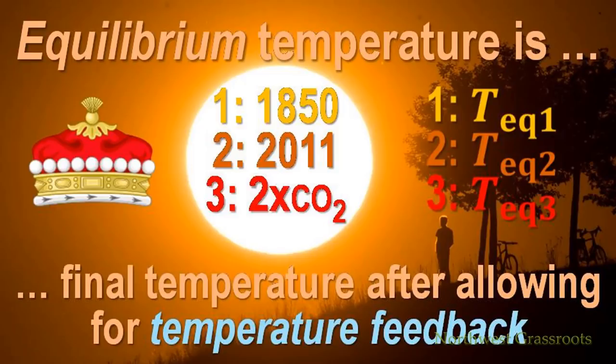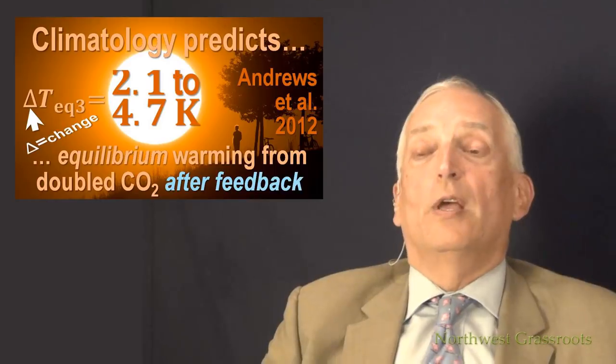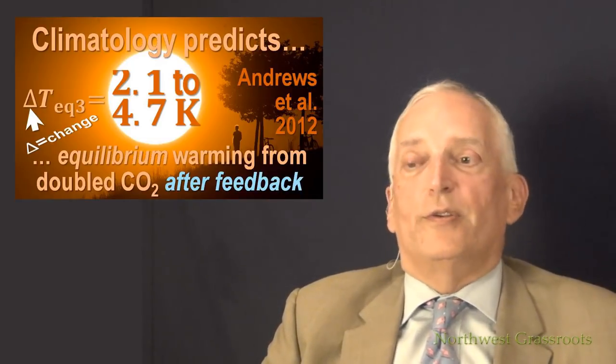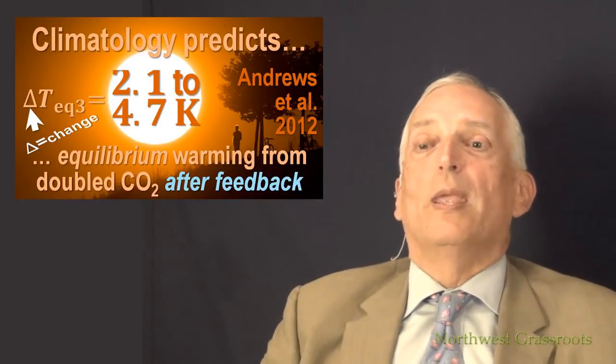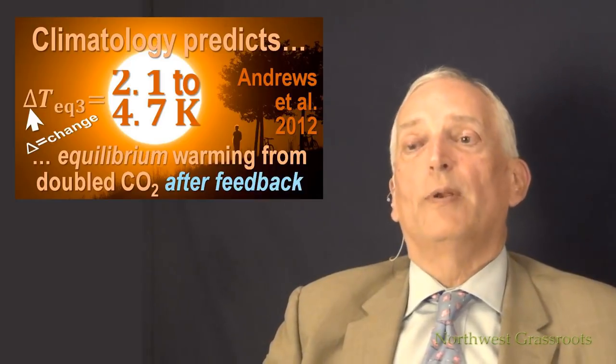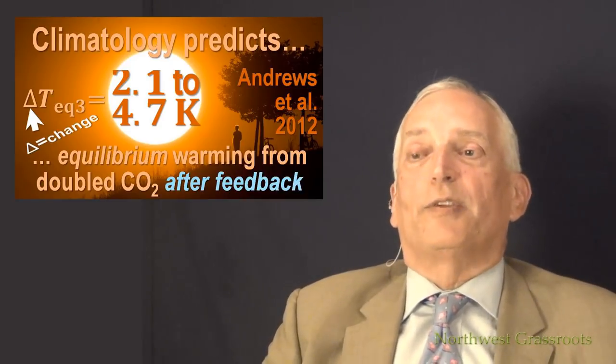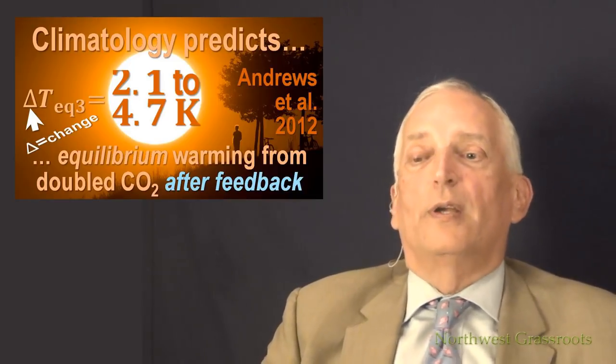We'll recap to say that equilibrium temperature is final temperature after the climate has settled down, allowing for not only the direct forced warming from adding CO2 or whatever it is to the atmosphere, but also after all temperature feedbacks have acted. Temperature feedback is a knock-on warming caused just by the fact that through CO2 or something else, we have caused the planet to warm, and the warming itself triggers further warming. At the moment, official climatology predicts, but they're wrong on this, so you'll no longer see the Viscount's Coronet on this slide, that the change in temperature per doubling of CO2, delta T, is somewhere between 2.1 and 4.7 Kelvin. That's what they predict per doubling of CO2 as the equilibrium warming after feedbacks have acted.